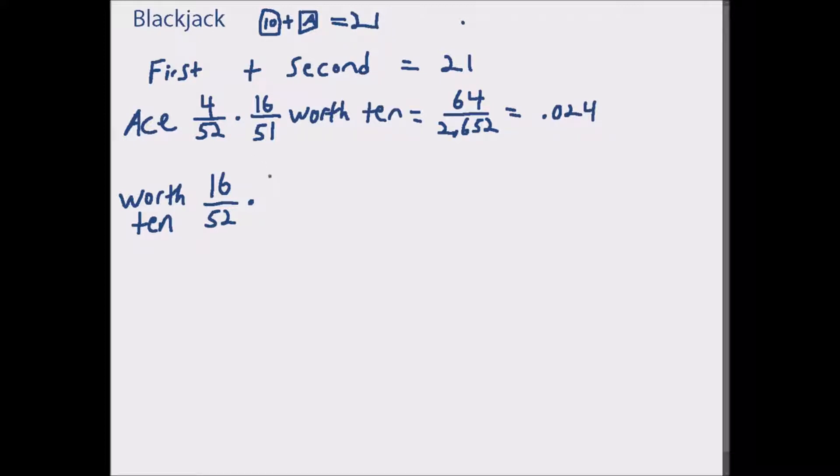That equals 64 over 2652, which equals 0.024. So if you add up these probabilities you get 0.048. Now let's do the same problem with combinations.